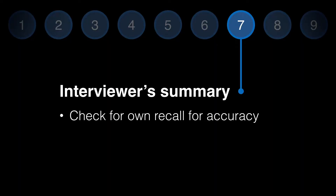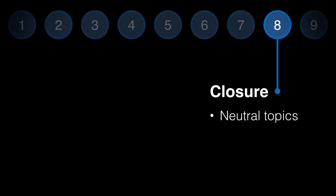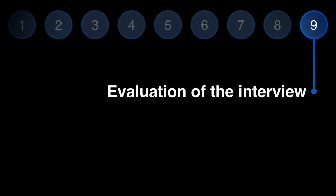Phase seven comprises the interviewer's summary of the witness's account to check their own recall for accuracy. Phase eight is closure, which means the interviewer gradually returns to neutral topics to conclude the interview on a positive note. The interviewer should provide information on what will happen after the interview and answer any questions that the witness has. Finally, phase nine is the evaluation of the interview with the interviewer's colleagues, which should take place to allow for continued professional development of the police.